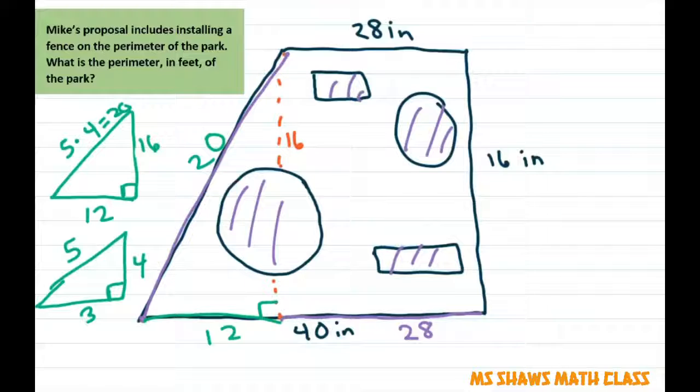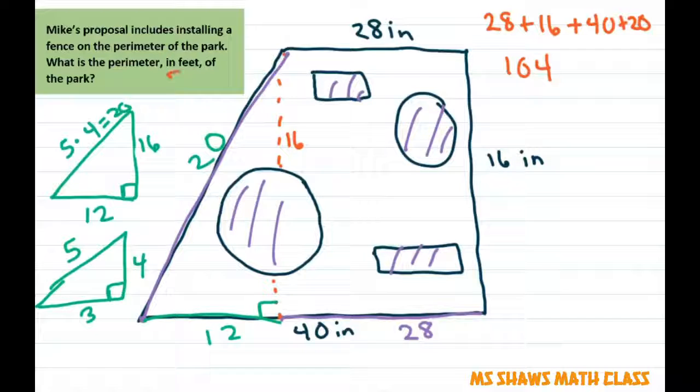So make sure you know your triples before you take the PSAT or ACT. So then you just add these up. So you get 28 plus 16 plus 40 plus 20. And that gives you 104 inches, but they want in feet. Now remember one inch on the drawing represents 1.5 feet. So what you're going to do is multiply this by 1.5. And that's going to give you 156 feet for the perimeter.